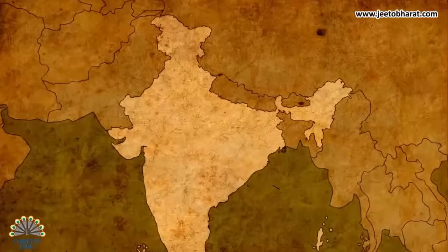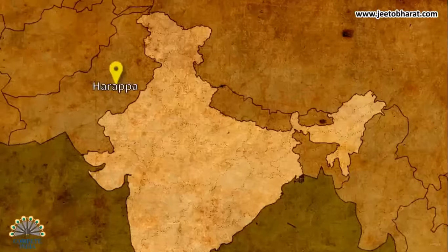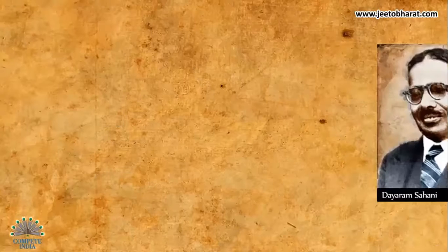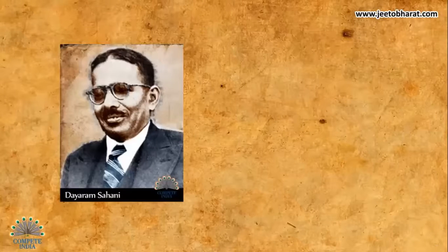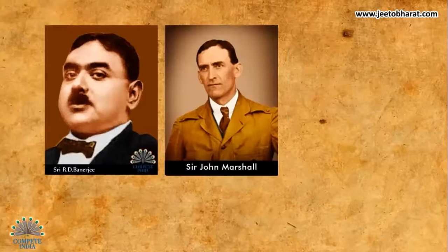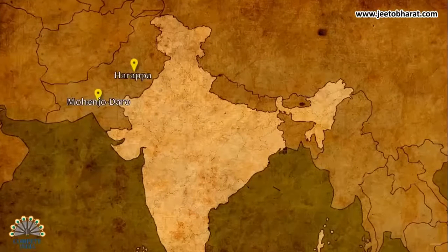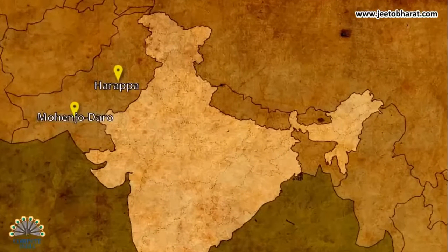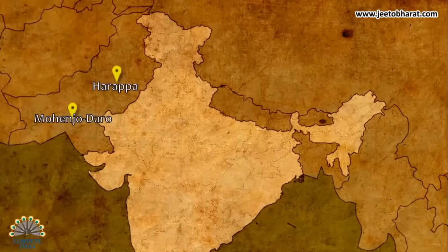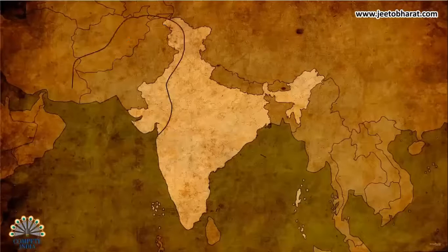One such significant contribution from archaeologists was the discovery of sites at Harappa and Mohenjodaro in the year 1920. The credit goes to archaeologists Dayaram Sahni, M.S. Watts, Mortimer Wheeler, R.D. Banerjee, Sir John Marshall, Alexander Cunningham and others. The excavation done at these sites tells us about the life and culture of the civilization that flourished around 3500 BC on the banks of the River Indus — the Indus Valley civilization.